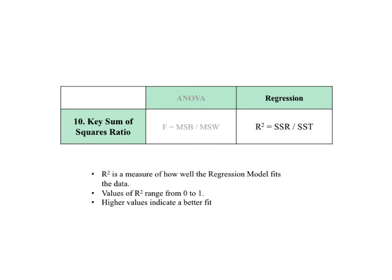For regression, the key sum of squares ratio is SSR divided by SST. SSR is the component of the total variation explained by the regression line. This ratio is called R squared, which is a measure of the goodness of fit of the regression line. Values of R squared range from 0 to 1, with higher values indicating a better fit. There is a predetermined cutoff level for R squared that varies by discipline — for example, engineers can be more rigorous than social scientists. If R squared exceeds this cutoff, the regression model is considered good enough and its predictions can be subjected to validation via designed experiments.